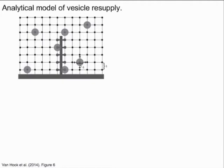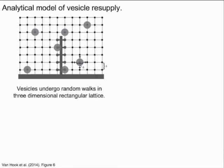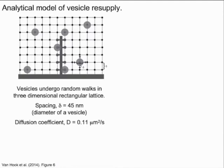To understand the processes that might limit replenishment, we developed an analytical model of vesicle diffusion in the cone synapse. In this model, synaptic vesicles undergo random walks in a three-dimensional rectangular lattice with a spacing of 45 nanometers, which is equal to the vesicle diameter. Vesicles move throughout the terminal with a diffusion coefficient of 0.11 micron squared per second.